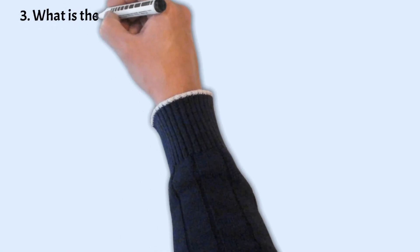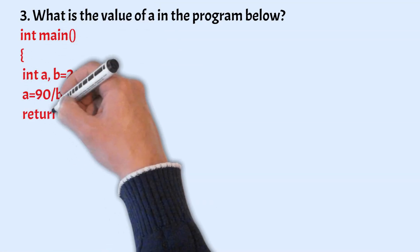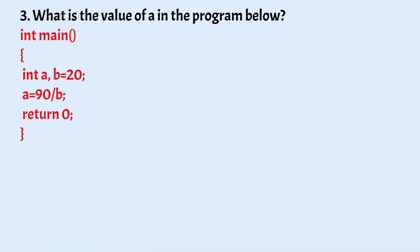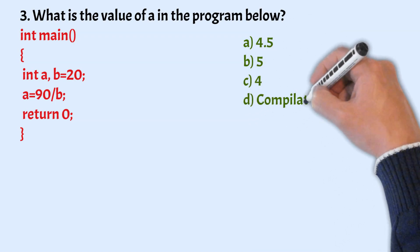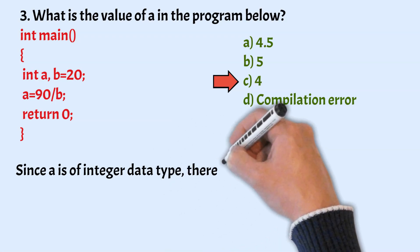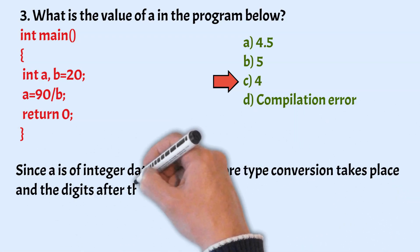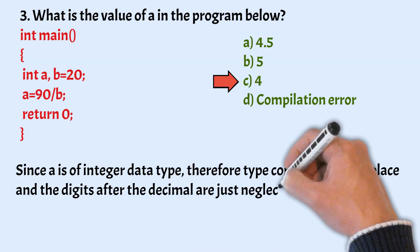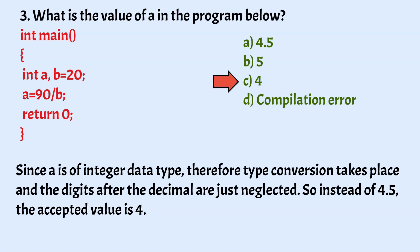The next one is: what is the value of A in the program below? The options are 4.5, 5, 4, and compilation error. The correct answer is option C, that is 4. Since A is of integer data type, type conversion takes place and the digits after the decimal are neglected. So instead of 4.5, the accepted value is 4.